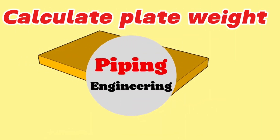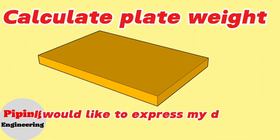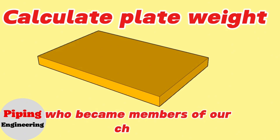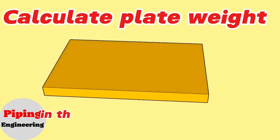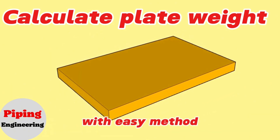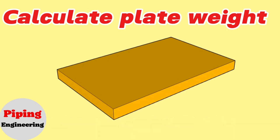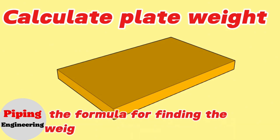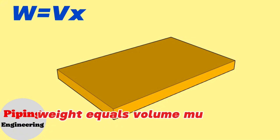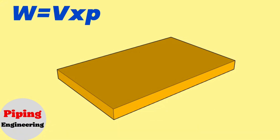We continue our free piping education with the next calculation video. I would like to express my deep gratitude to our subscribers who became members of our channel. In this video we will show you step by step how to calculate the weight of a rectangle-form iron steel with an easy method. Let's start our education video. The formula for finding the weight of rectangle-form iron steel is: Weight equals volume multiplied by the density of the iron. To calculate the volume of any detail it is necessary to multiply its width, length, and height together.